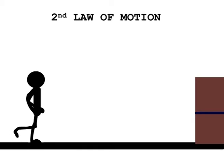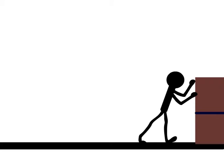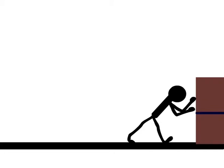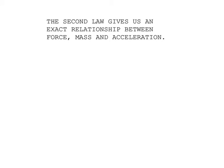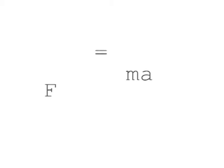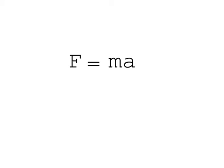According to the second law of motion, acceleration is produced when a force acts on a mass. The greater the mass, the greater the amount of force needed. The second law gives us an exact relationship between force, mass, and acceleration. It can be expressed as a mathematical equation: F equals MA, or force equals mass times acceleration.